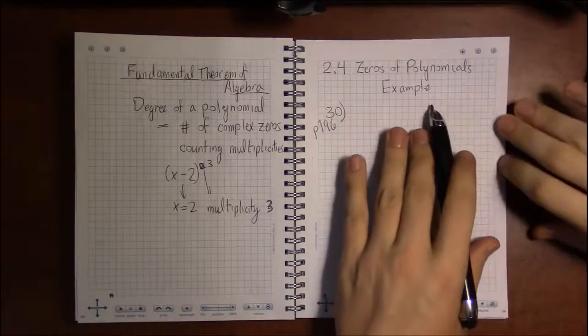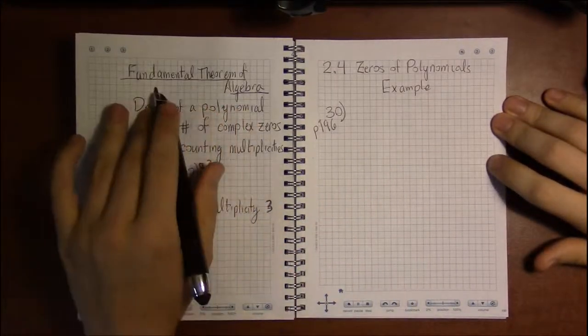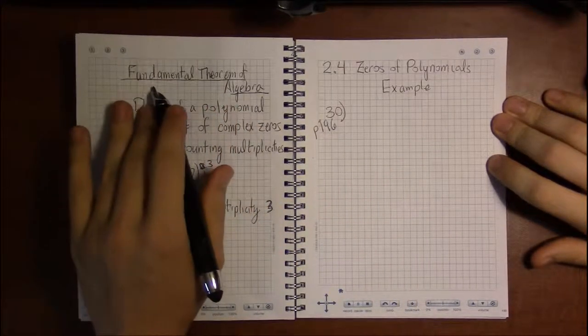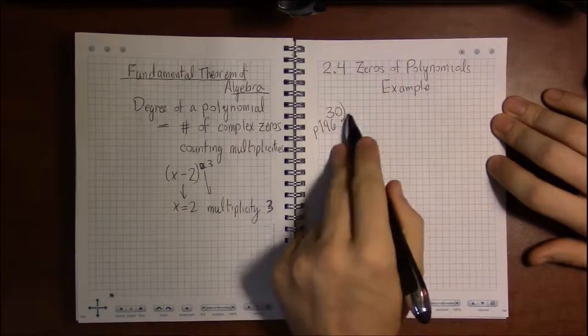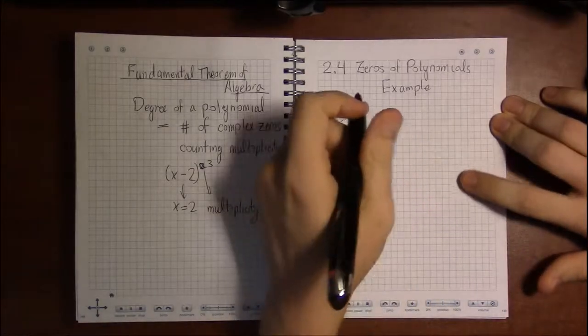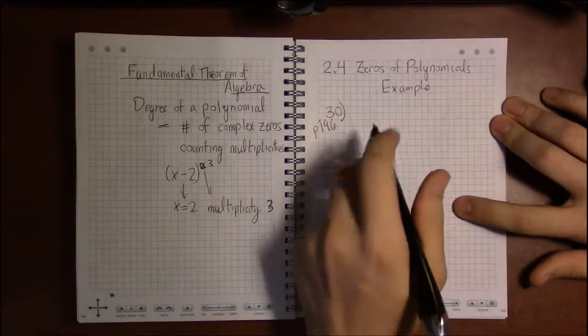All right, let's look at some more examples. There's not a lot we can do with the Fundamental Theorem of Algebra, but the Conjugate Pair Theorem does have a number of exercises related to it. I'm looking at problem 30 on page 196.